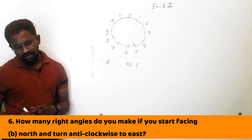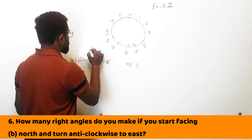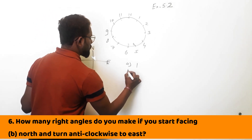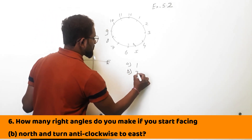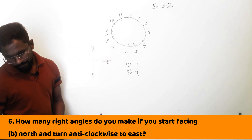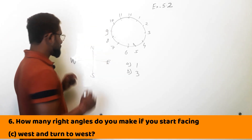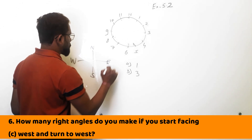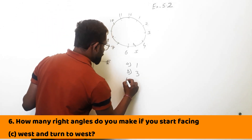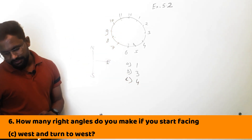B part: you are at north and turn anti-clockwise to east — you are making 1, 2, and 3 — that is 3 right angles. C part: west and you turn to west — either this way or this way. So you are making 4 right angles, which is a complete revolution.